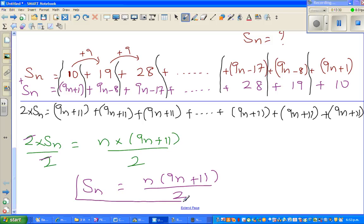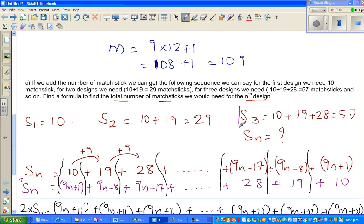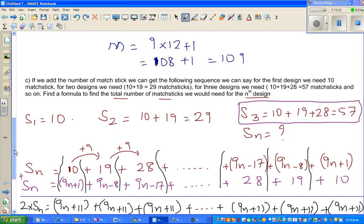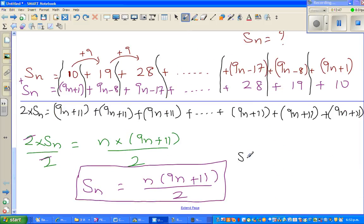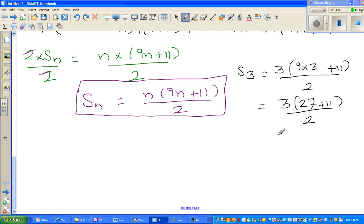Now we need to check this formula, whether this formula is really right or wrong. We said S3 is 57. Let's check that. So S3 is you have to put 3 in place of n. So let's see. 3 times (9 times 3 plus 11) divided by 2. So it is 3 times, this is 27 plus 11, divided by 2. This is 3 times 38 divided by 2. This is 3, sorry. So let me use a calculator. This is nothing but 3 times 19, which is 57.